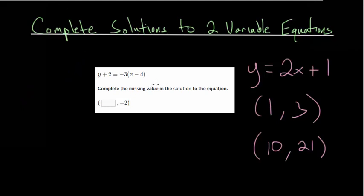So with these questions, we're going to be given some coordinate pair where either the x value or the y value is missing. Remember, x goes first, then y. So let me first rewrite the equation they give us. We have y plus 2 is minus 3 times x minus 4. And we need to find the missing value in the solution to this equation.